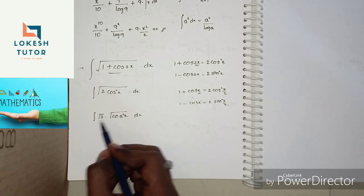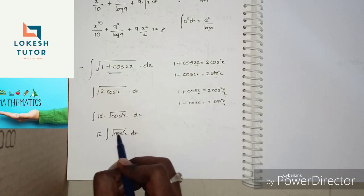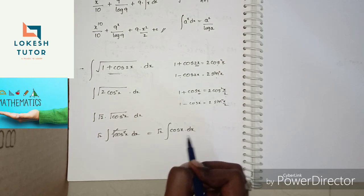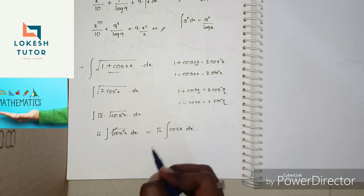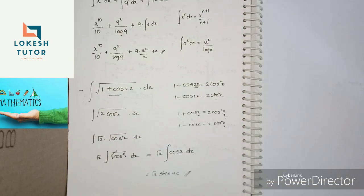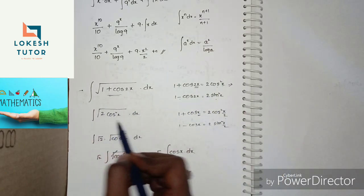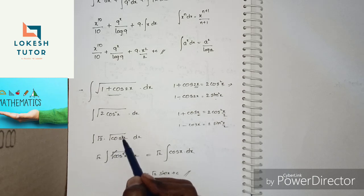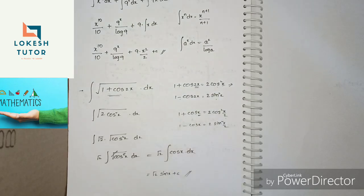Since √2 is a constant, we take it outside the integral. √(cos²x) = cos x. So the integral becomes √2 · integral cos x dx. The formula: differentiation of sin x is cos x, so integral of cos x = sin x. Final answer: √2 · sin x + C.